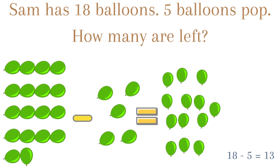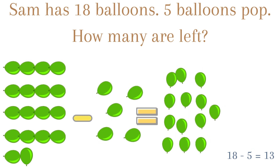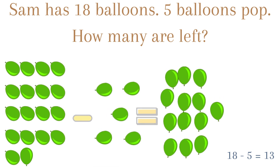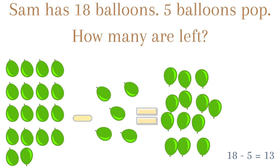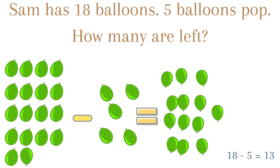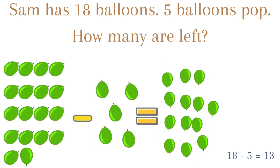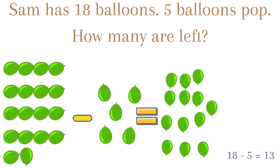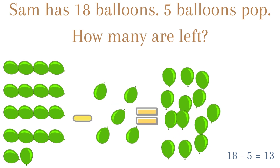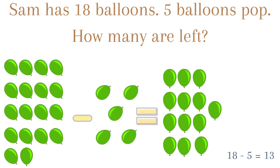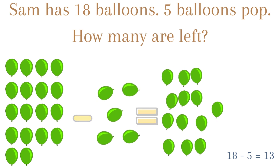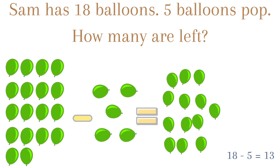Sam has 18 balloons. 5 balloons pop. How many are left? 18 minus 5 equals 13. Thank you.